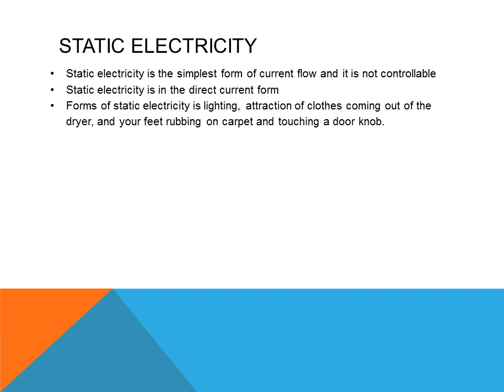Static electricity is the simplest form of current flow and it is not controllable. Examples include a spark when you rub your feet on a carpet and touch a door knob, causing a very small shock. Lightning outdoors is uncontrollable but carries a very high potential of energy. Old-style friction tape, if pulled very rapidly, would cause static electricity to form between it.